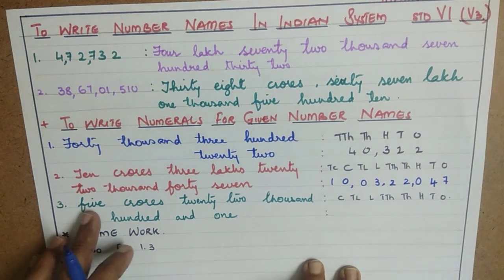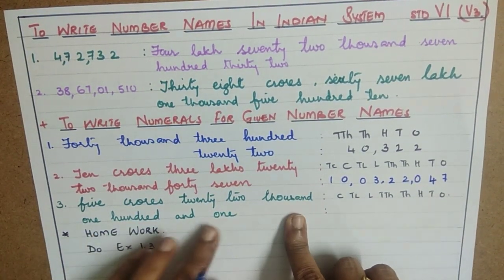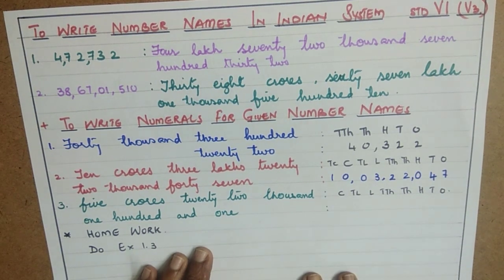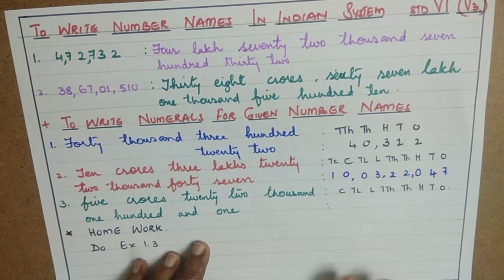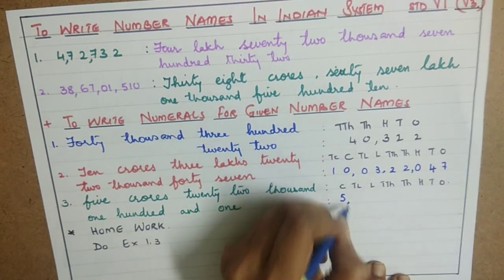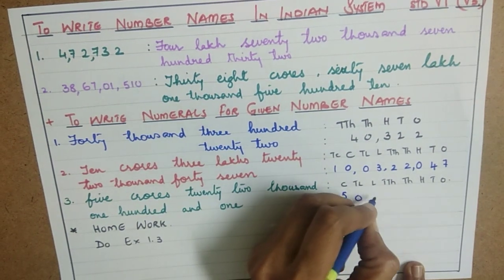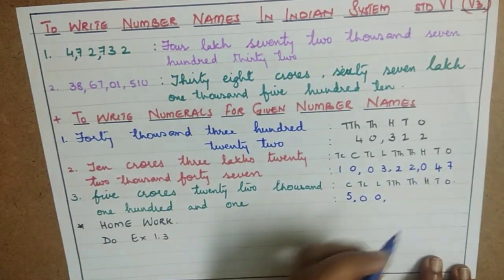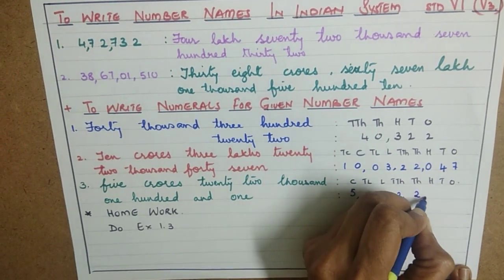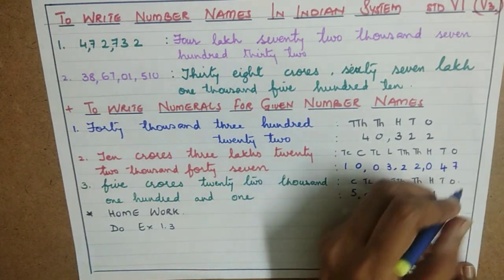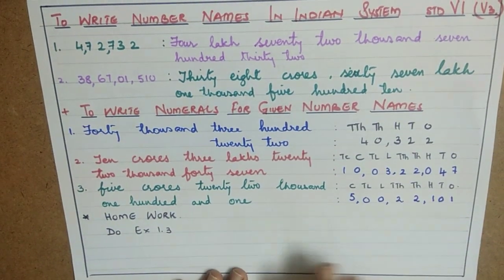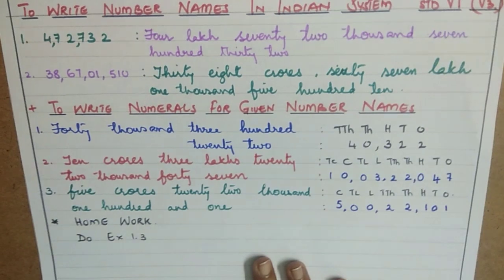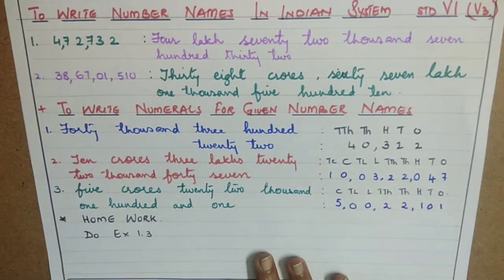Moving on to the next one: 5 crores, 22,101. Here, 5 crores means it is an 8-digit number, so let us check that we get all 8 digits. Write 5 in the crores place. 10 lakhs are not there, and lakhs are also not there, so place two zeros under the lakhs and ten-lakhs positions. Then 22,000: 2 ten-thousands, 2 thousands. Then 100, no tens, and 1 one.